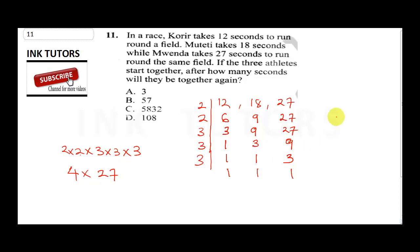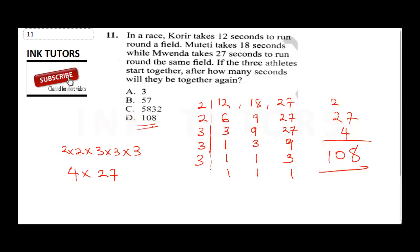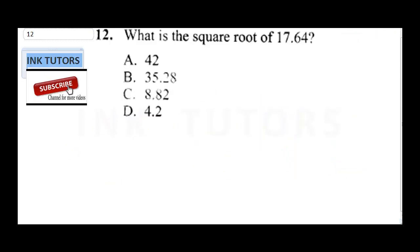2 times 2 is 4, and 3 times 3 times 3 is 27. So the LCM is 4 times 27: 4 times 7 is 28, carry 2, 4 times 2 is 8 plus 2 is 10. Our final answer is 108 seconds. That takes us to Question 12.